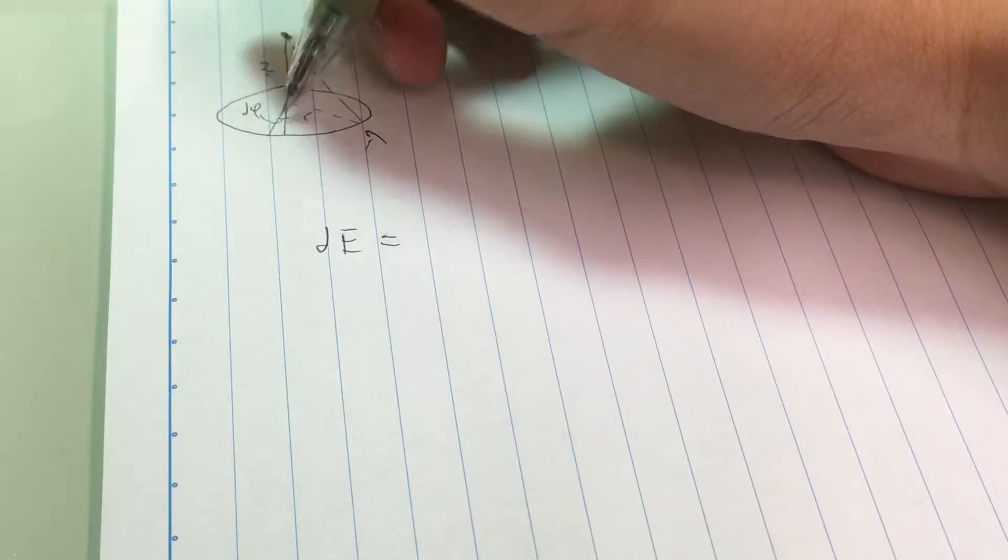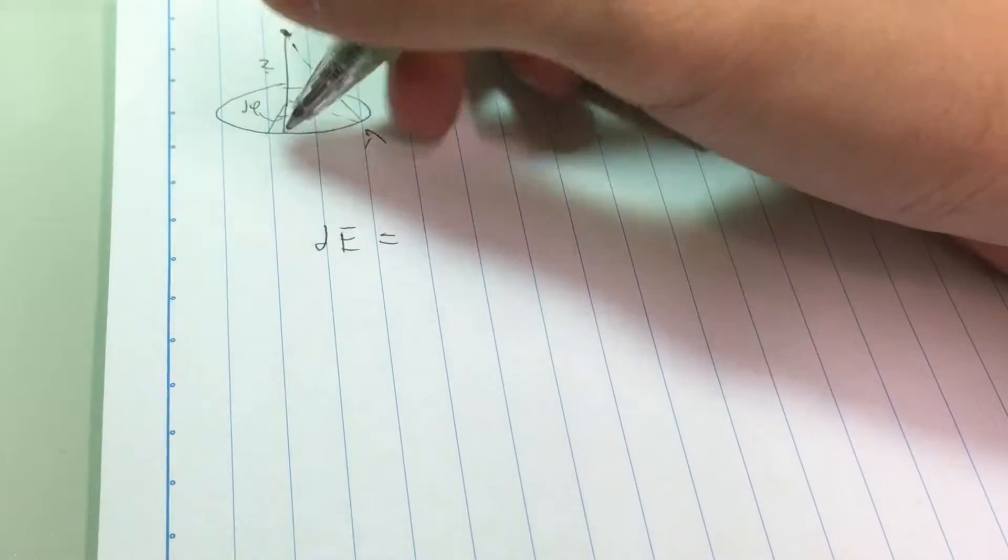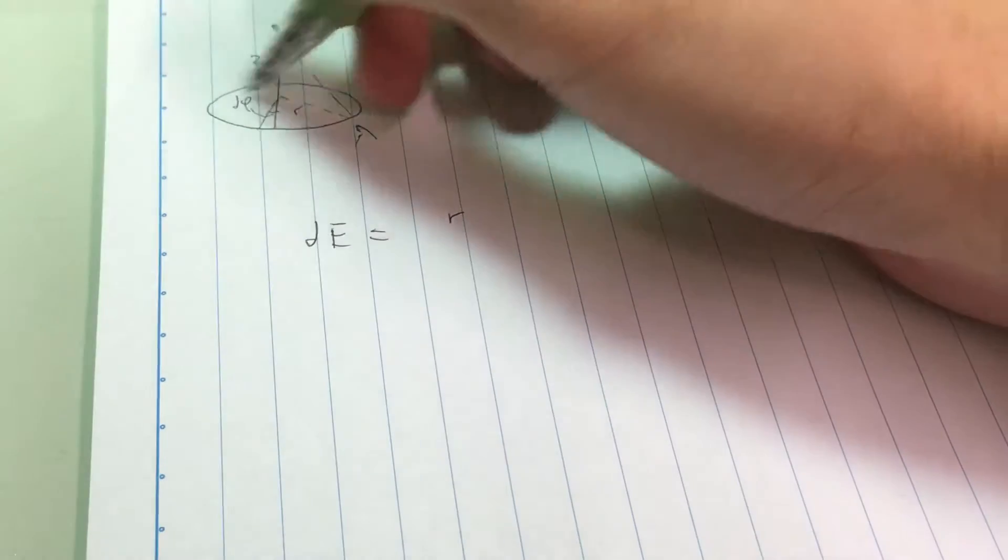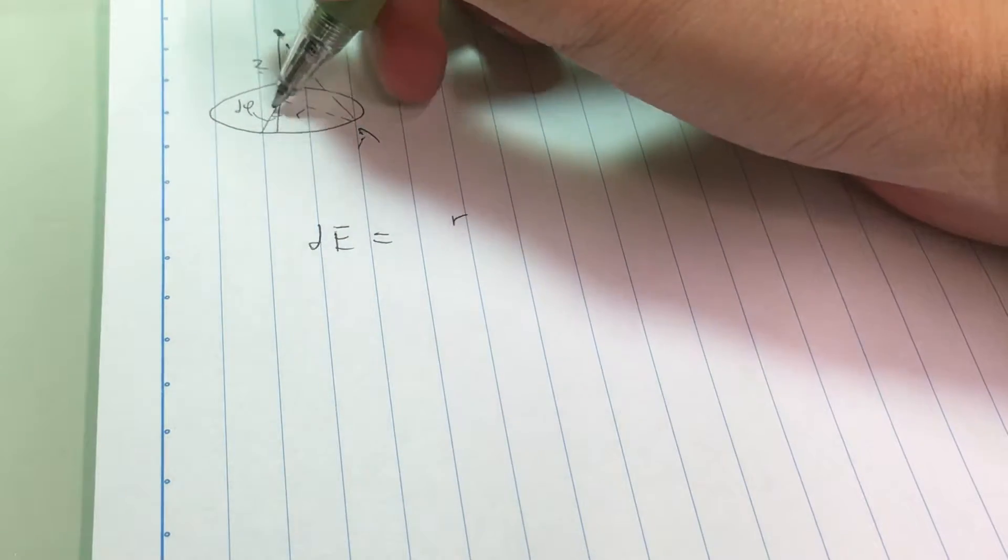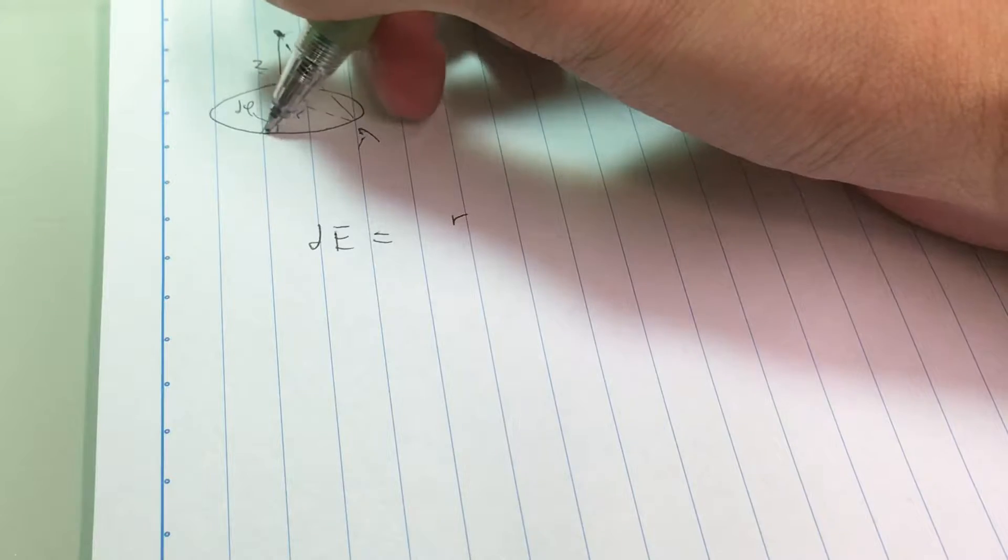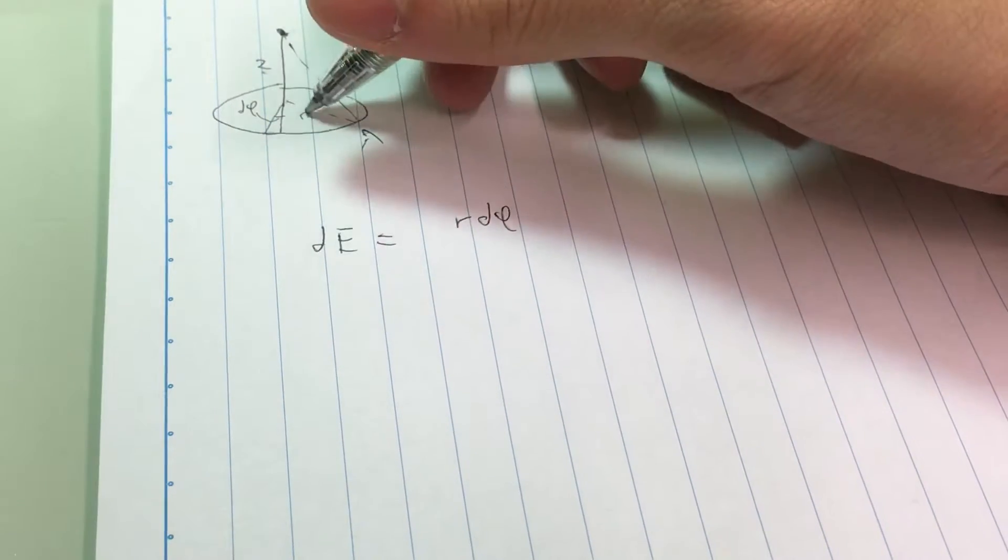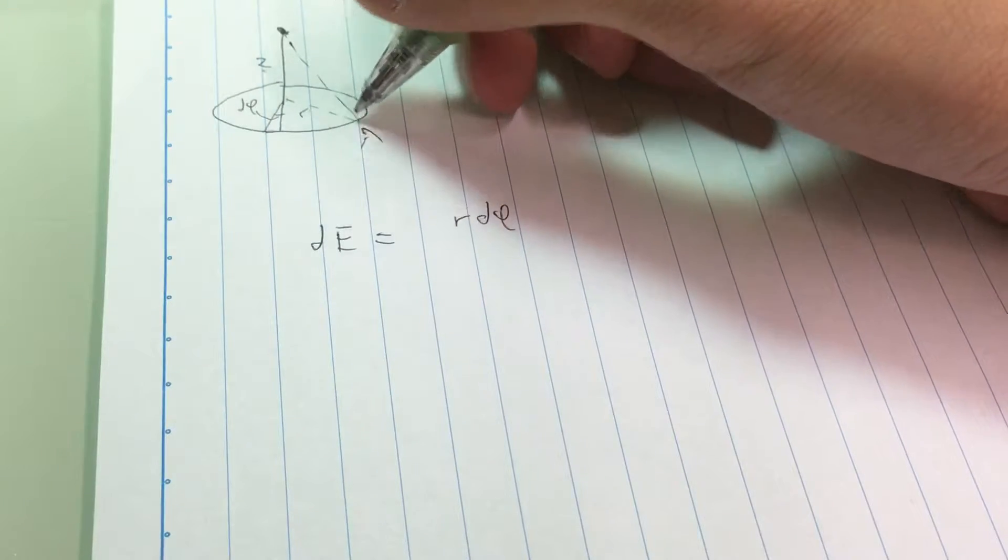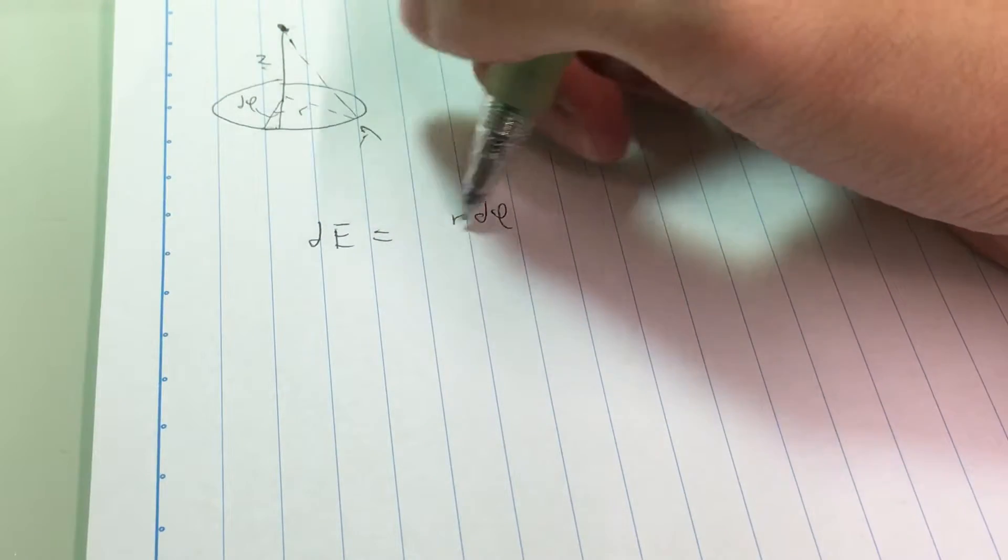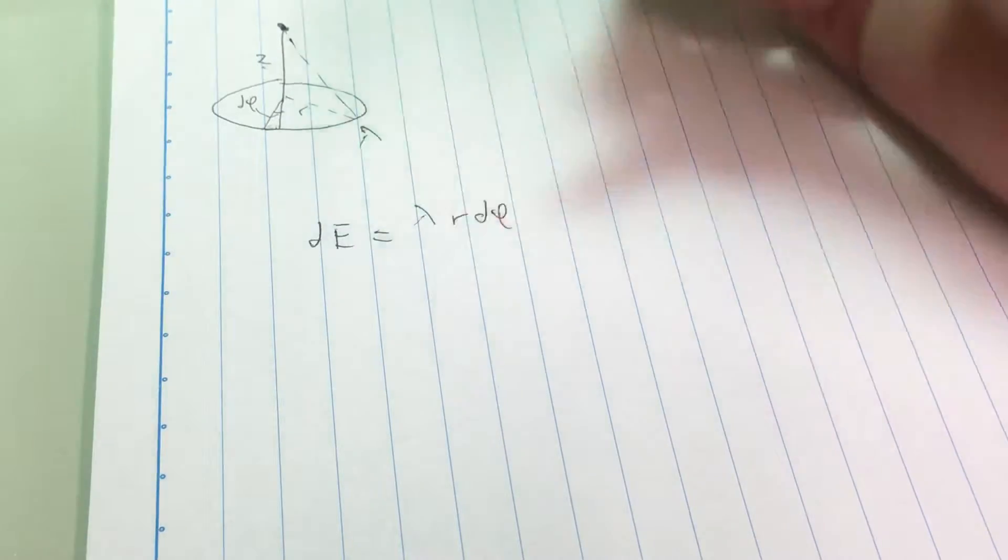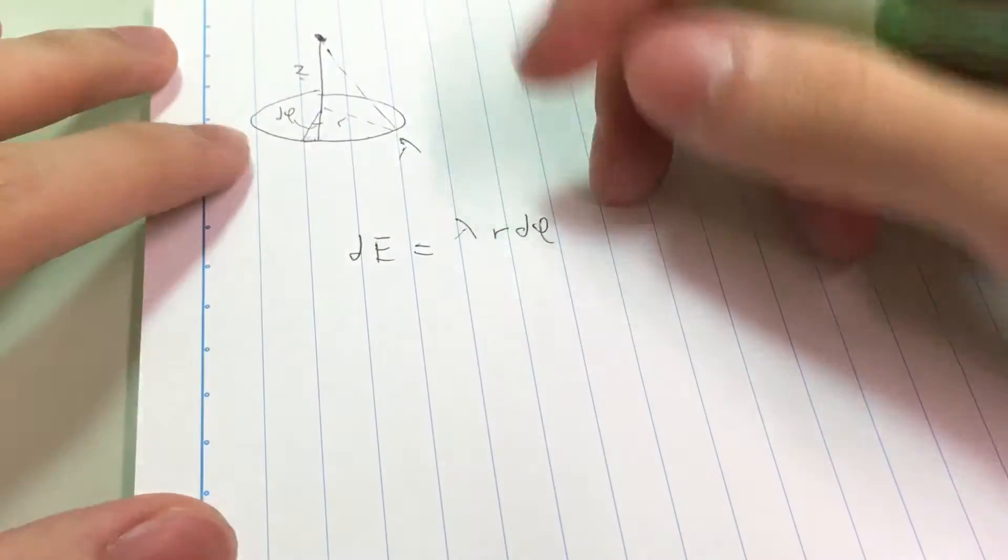This radius r, I'll assume it's constant in this case because this is just a circular hoop. So this arc length is r multiplied by d phi. The charge of this part is the length of this part multiplied by the charge density. So that's the charge at this point.